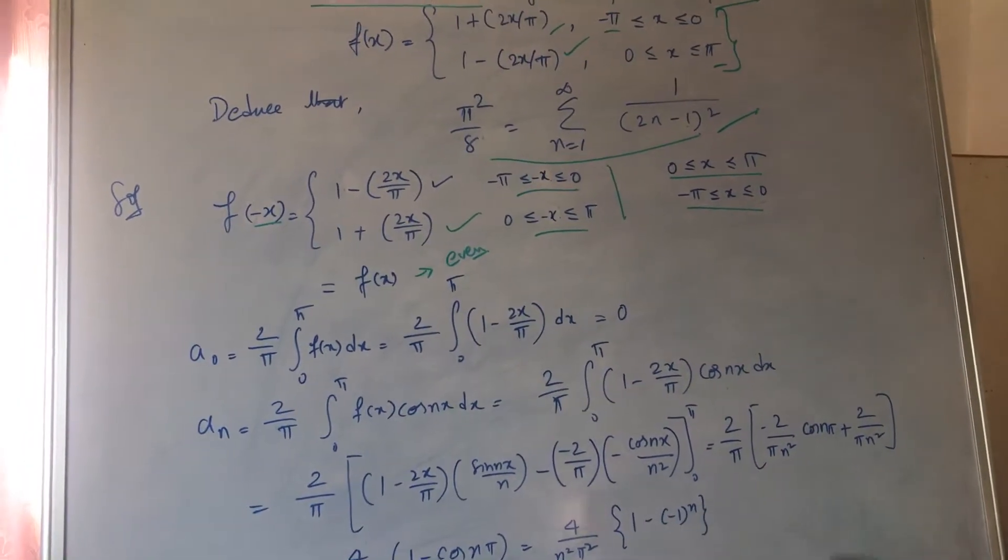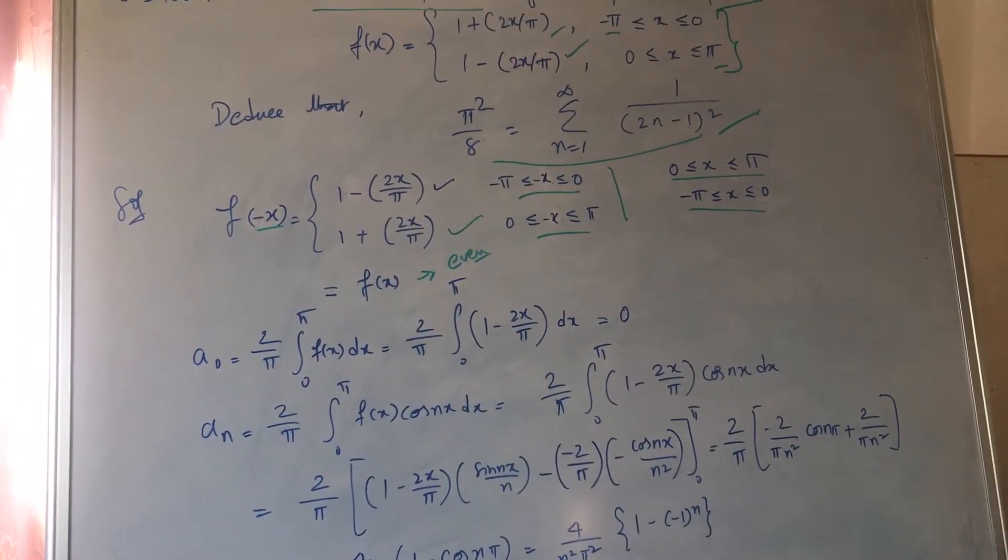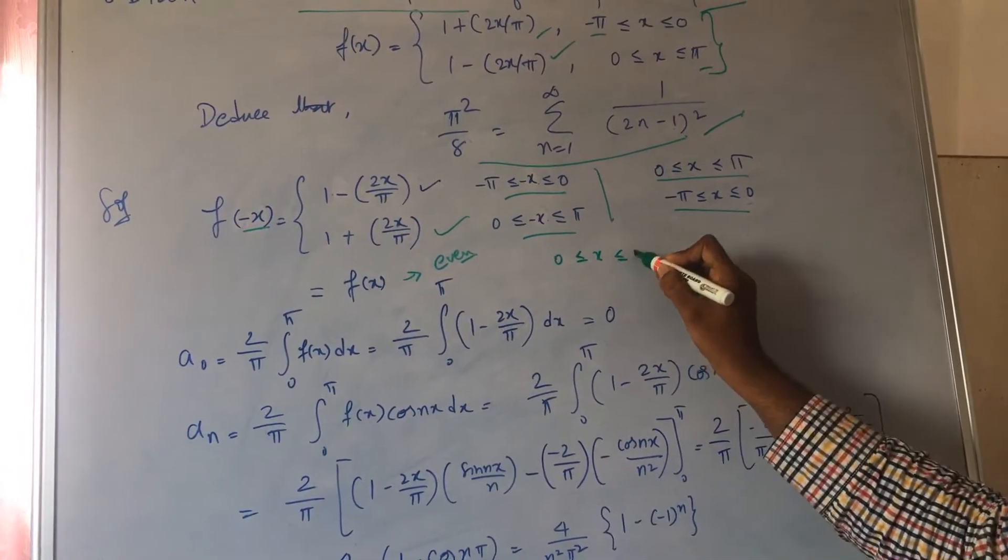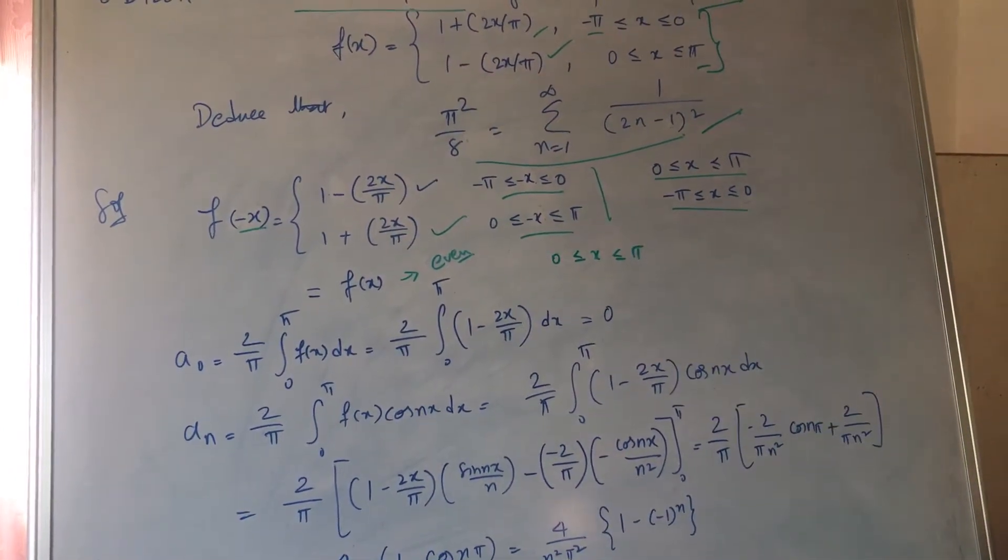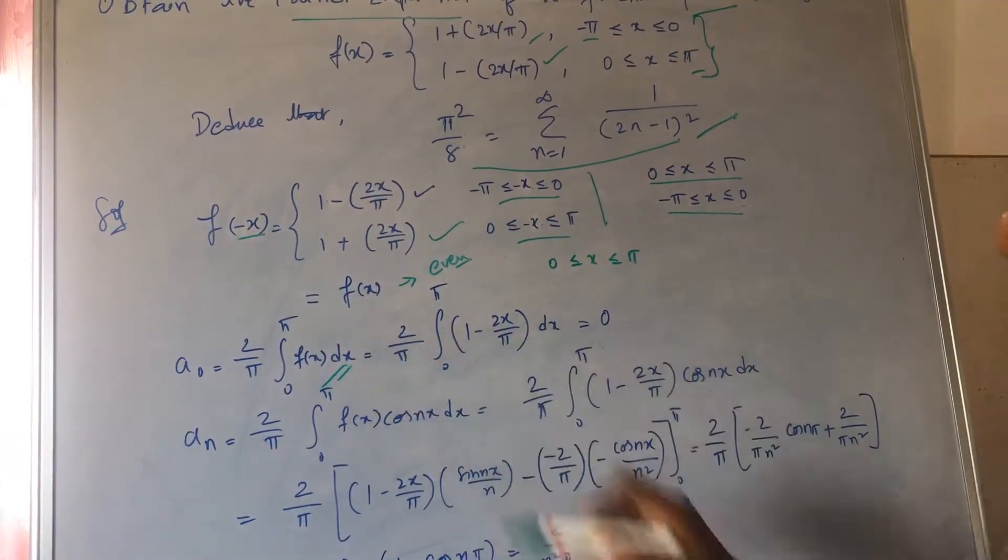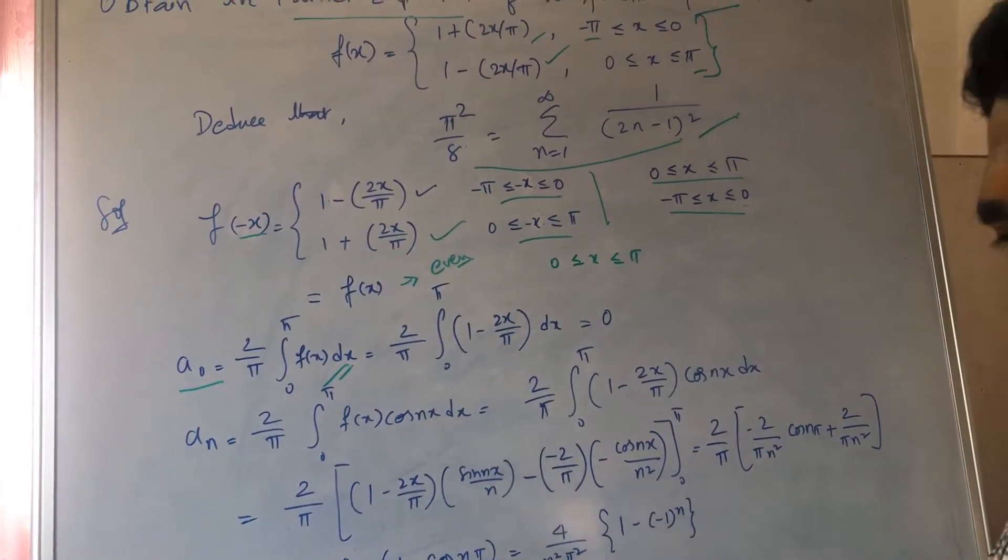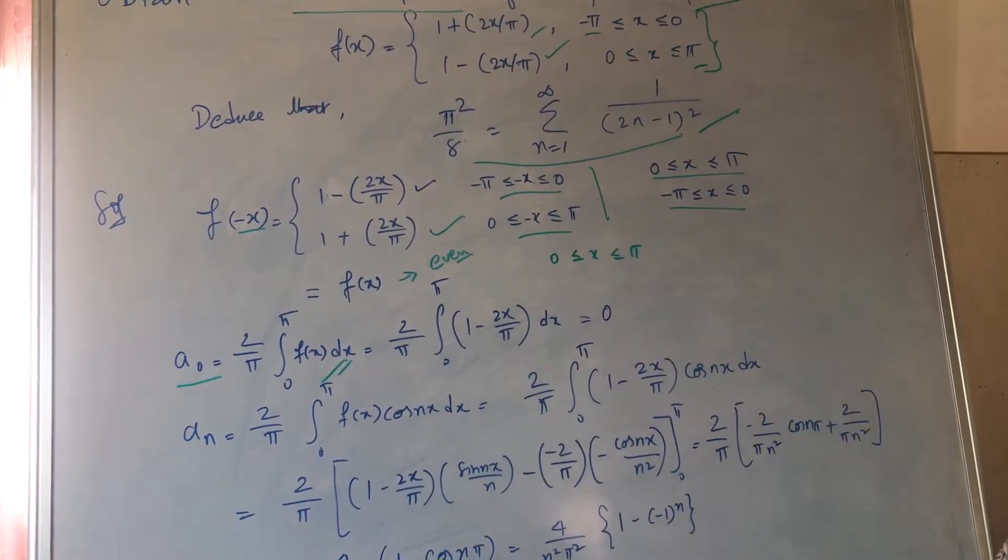Now the question is, how do you take the limits? The limit should be 0 to π. This is the formula for a naught. Since it is an even function, you have to find the constants which is a naught and aₙ.